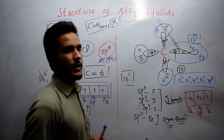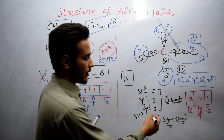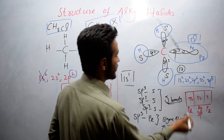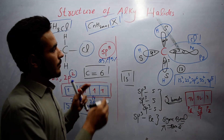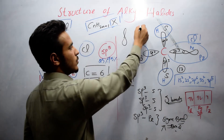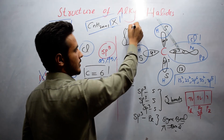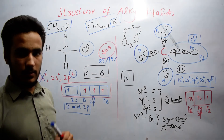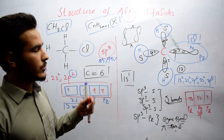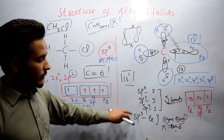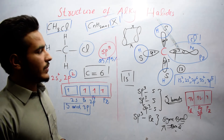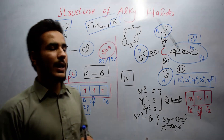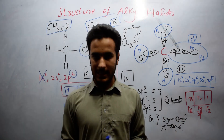The opposite of a sigma bond is a pi bond, in which the bond is formed due to sideways overlapping. I have already explained sigma and pi bonds — you can watch from the playlist. In this way, carbon completes its valency, and I hope the structure of alkyl chloride and its sp3 hybridization is now clear. Thanks for watching.